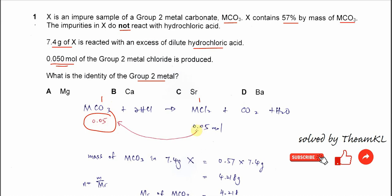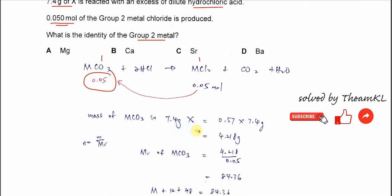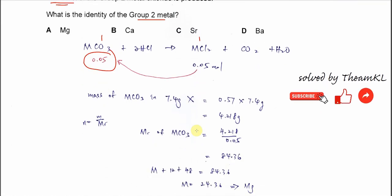Once we know the moles, we need to get the actual mass of the Group 2 carbonate. The actual mass that will react with the acid is 0.57 times 7.4 grams. This is the actual Group 2 metal carbonate that reacts with the acid.